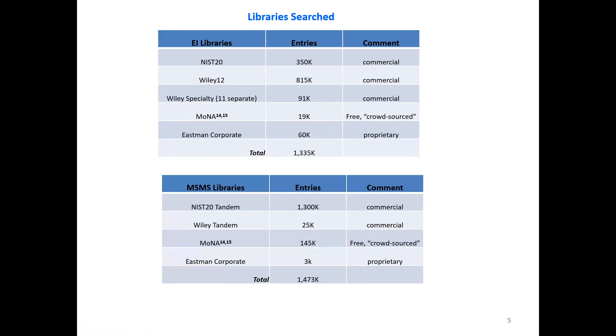We also have MSMS libraries, the NIST tandem library has about 1.3 million compounds or spectra in it. The Wiley tandem libraries and the Mona has a fairly large database of a free crowdsource database. And then we have a smaller number in our Eastman corporate library of MSMS spectra for a total of about 1.4 million spectra that can be searched with the software.